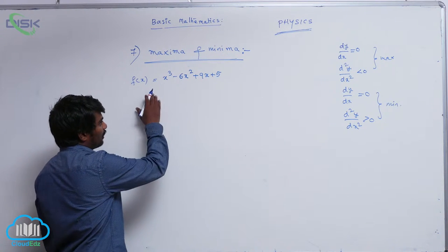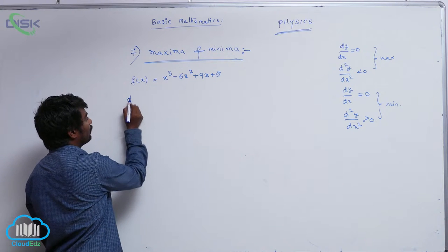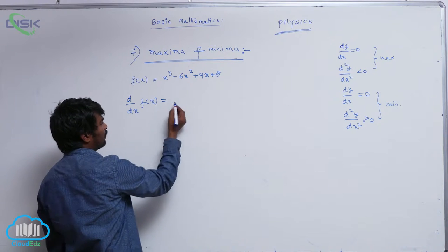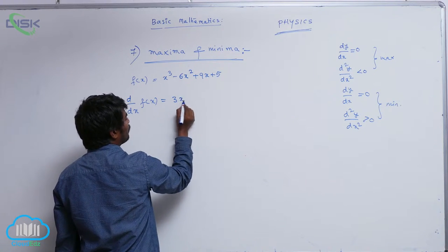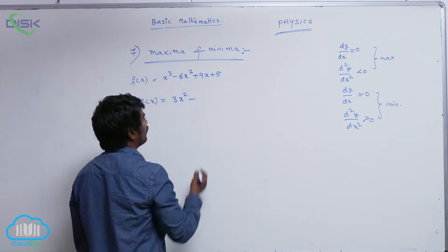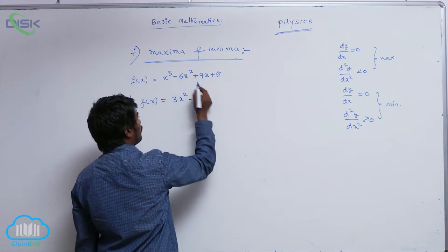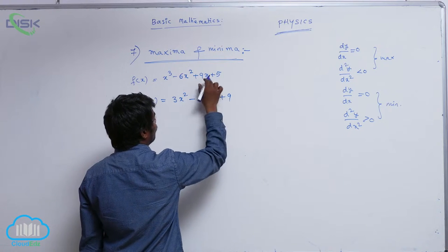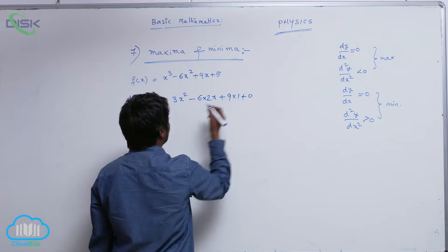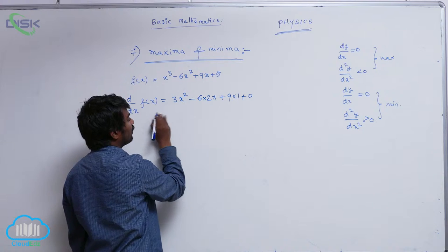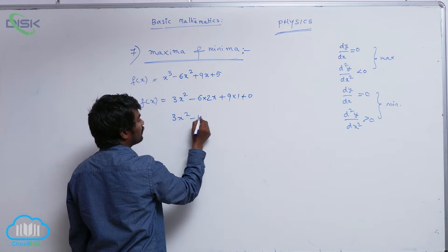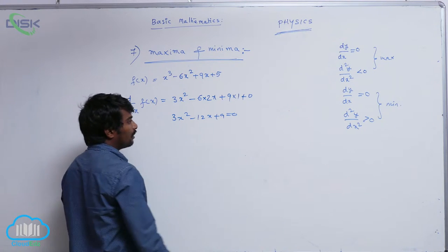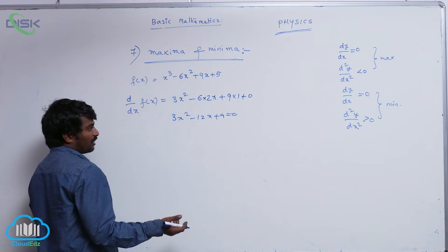First, let us make the first derivative equal to 0. d by dx of f of x: differentiation of x cube is 3x square, 6 is constant so x square differentiation is 2x, giving minus 12x, plus 9 is constant so x differentiation is 1, plus 0. So it is 3x square minus 12x plus 9 is equal to 0, because the first derivative equals 0 whether it attains maxima or minima.